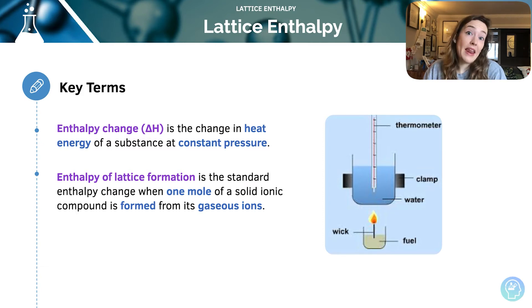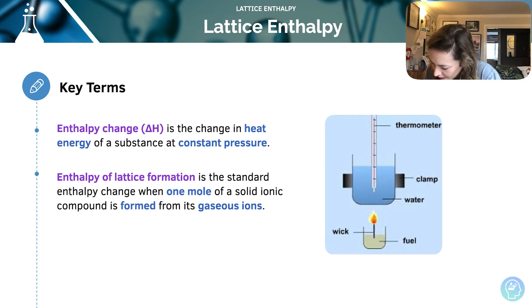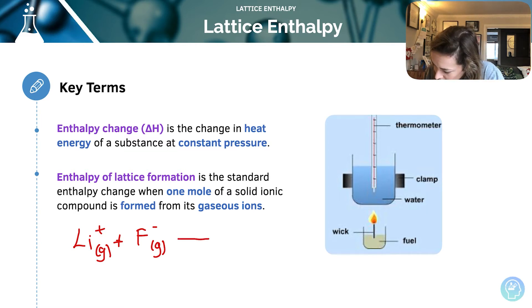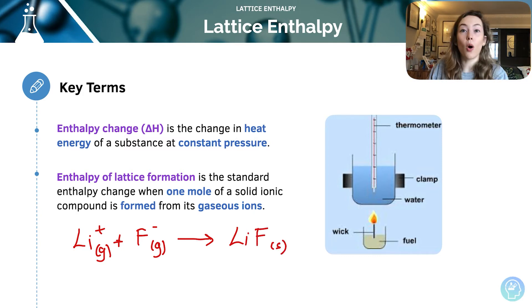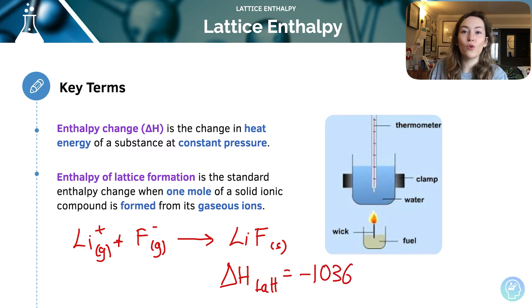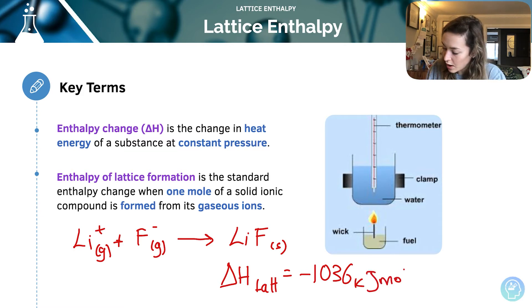An enthalpy change of lattice formation is always exothermic, so it's always a negative value. For example, if we have a lithium ion and a fluoride ion — and because of the definition, I need to ensure I write that they're gaseous — they are going to form one mole of solid lithium fluoride. The lattice enthalpy change is minus 1036, and of course the units of enthalpy are always kilojoules per mole.